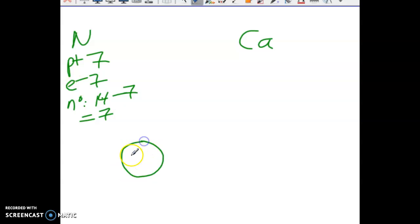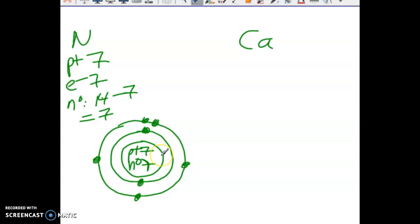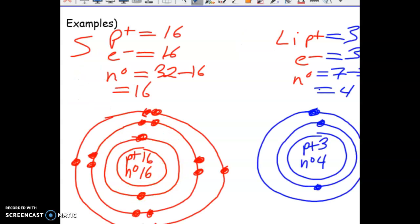So you should have a circle with your protons and neutrons written inside. And then we have 7 electrons: 1, 2, 3, 4, 5, 6, 7. Actually we haven't talked about valence electrons, so let's go back for a second.